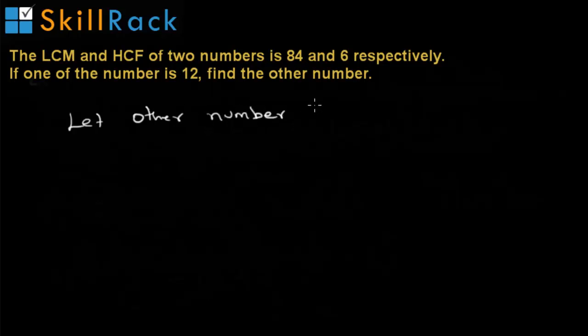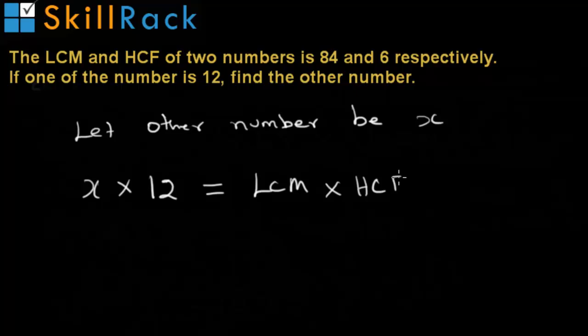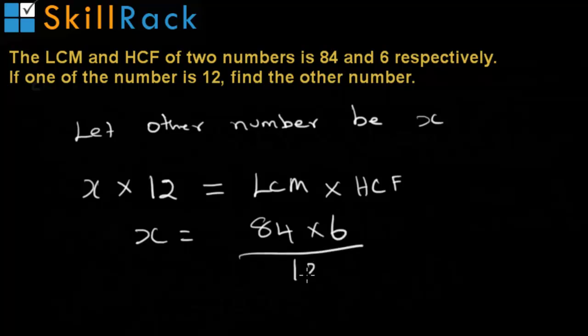Let the other number be X. So, the product of the two numbers is equal to product of LCM into HCF. So, X into 12 is equal to 84 into 6. So, X is equal to 84 into 6 by 12, which is nothing but 42.